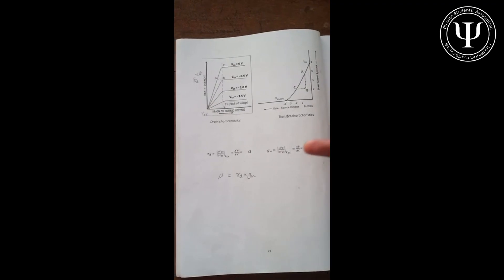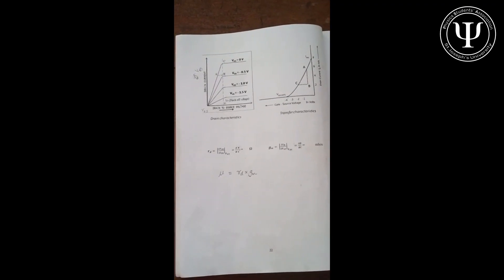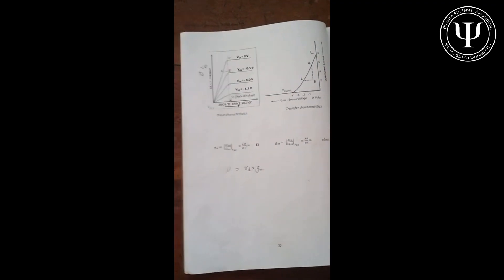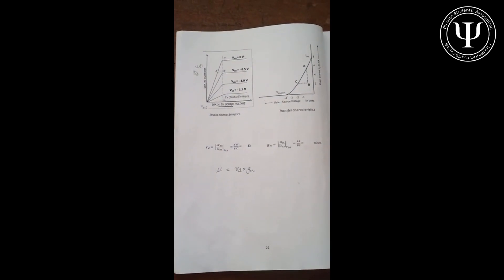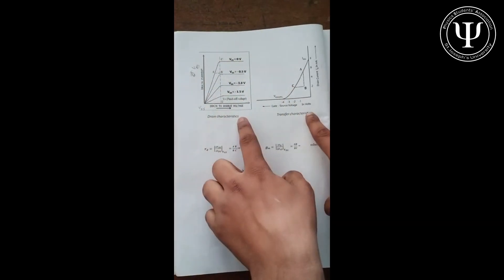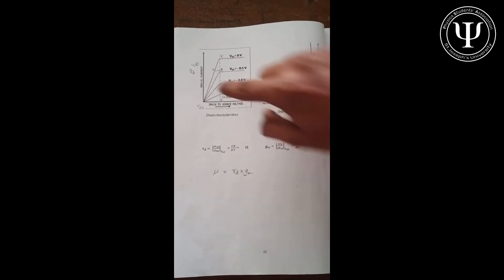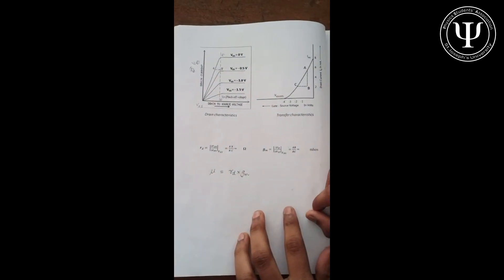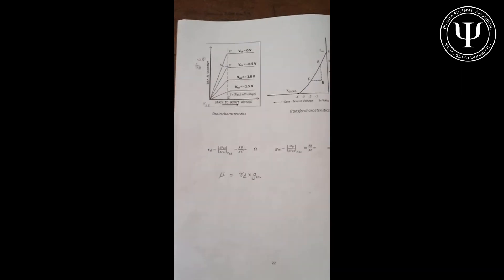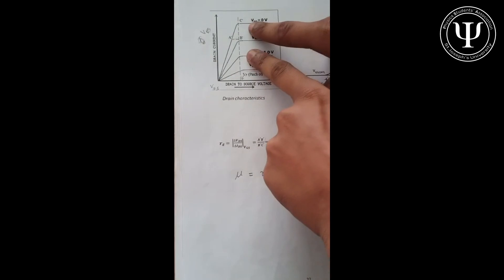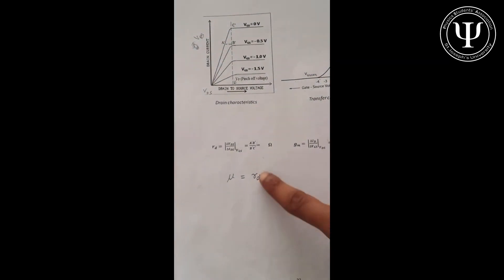Now we come to the next part of the experiment: the graphs and the formulae. I'm combining both together. The model graph should look like this, but for those who find it hard to remember, just know that drain current is on the y-axis and voltage on the x-axis. The first part is the drain resistance, and you take the reciprocal of the slope obtained from this graph. That's the drain resistance.